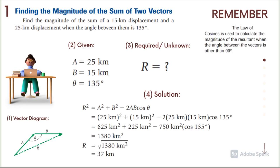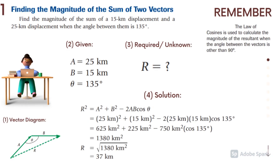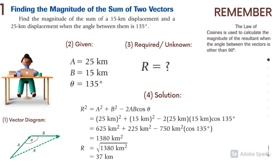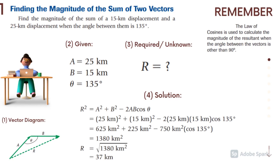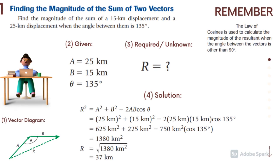Then, you have to draw the resultant vector. Next, you have to identify all the given in the problem. Vector A is equal to 25 kilometers. Vector B is equal to 15 kilometers. And the angle between them is equal to 135 degrees.